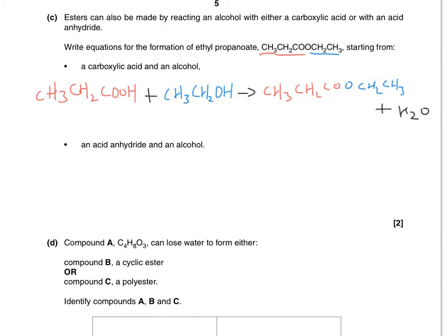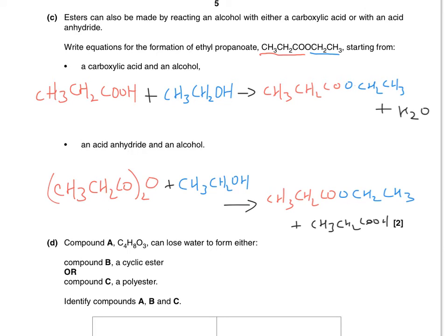That gives you ethyl propanoate and water as well — don't forget about the water, students often do, and that would cost you a mark. In terms of acid anhydride and alcohol, you would use propanoic anhydride to generate the oate part of the ester, and the same ethanol for the ethyl group. The other product, instead of water, is the carboxylic acid from the anhydride — so you'd get propanoic acid.